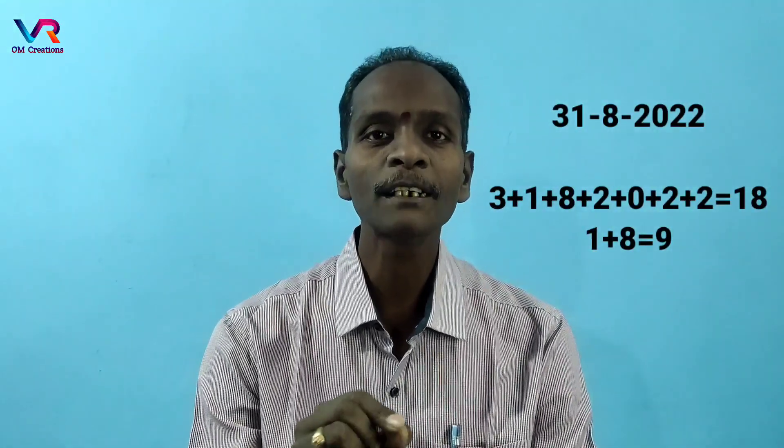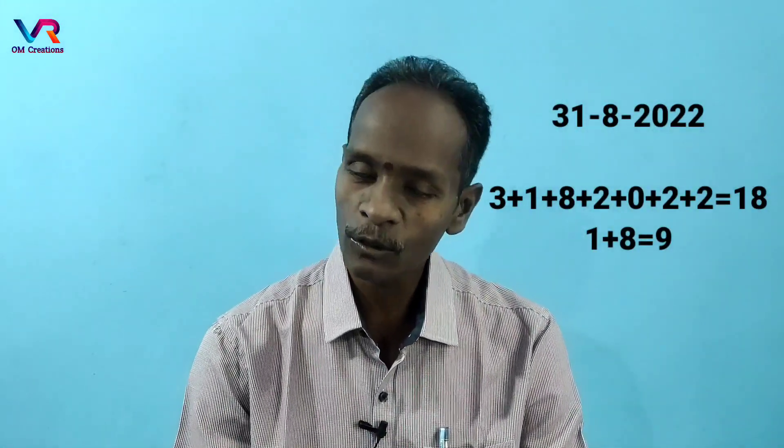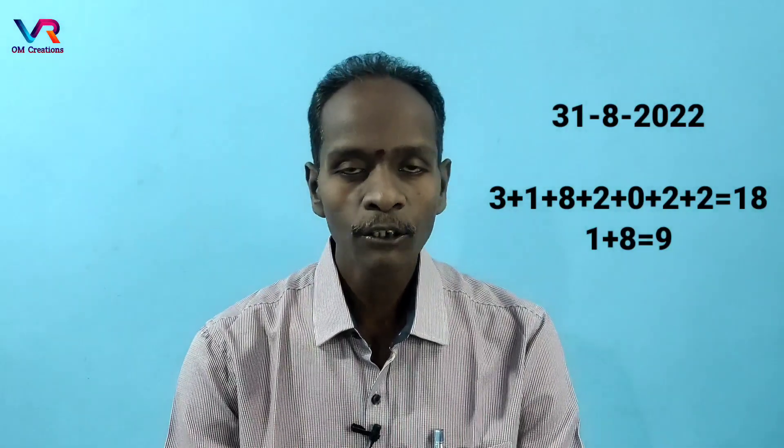That means we have to look at this result: 3 plus 1 equals 4, 4 plus 1 equals 8, 8 plus 2 equals 12, 12 plus 2 equals 14, plus 2 equals 18.